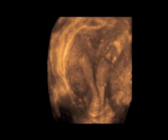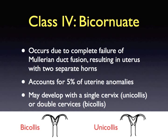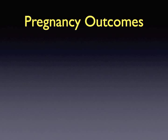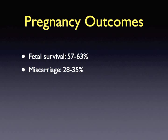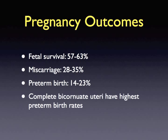A bicornuate uterus may develop with a single cervix, called unicollis, or a double cervix, called bicollis. Fetal survival rates in women with a bicornuate uterus range from 57% to 63%. Miscarriage rates lie within 28% to 35%, followed by premature birth rates of 14% to 23%. The length of the septum is directly related to the incidence of abortion and preterm delivery, with complete bicornuate uteruses having the highest rates.